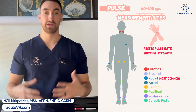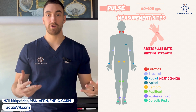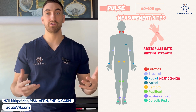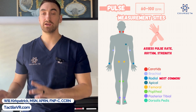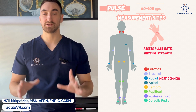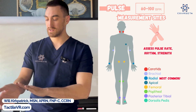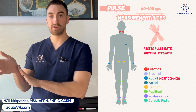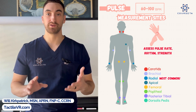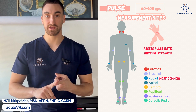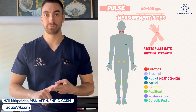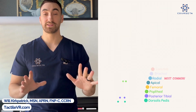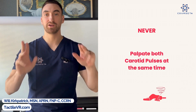Next is pulse. The normal range for an adult pulse is 60 to 100 beats per minute. The most common site to check a pulse is your radial site. When checking that pulse rate, you also want to note the pulse strength, symmetry, and rhythm.